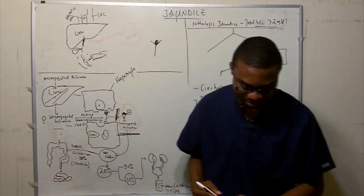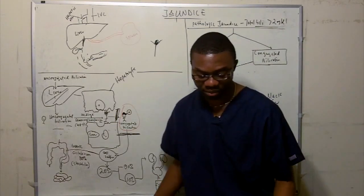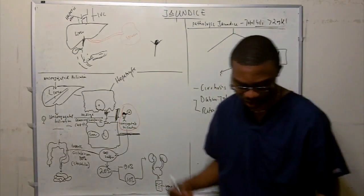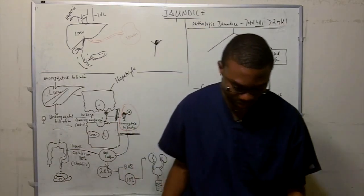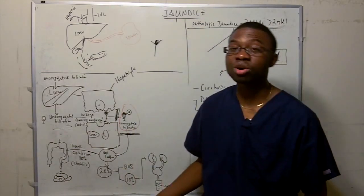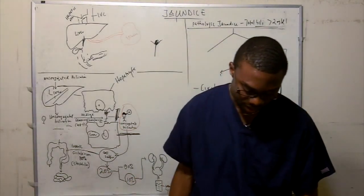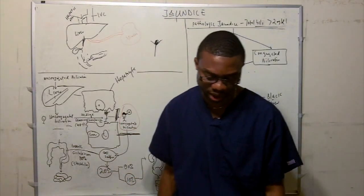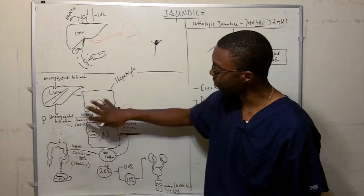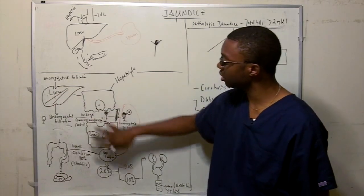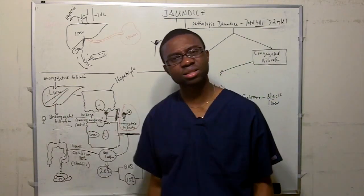Additional intrahepatic causes of conjugated hyperbilirubinemia include primary biliary cirrhosis, primary sclerosing cholangitis, drugs (birth control pills), and anything causing hepatocellular damage such as viral hepatitis and cirrhosis.